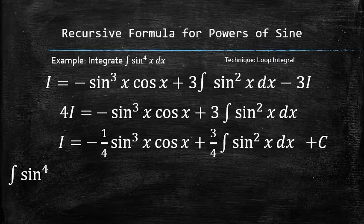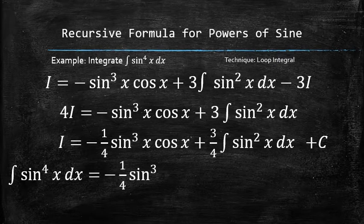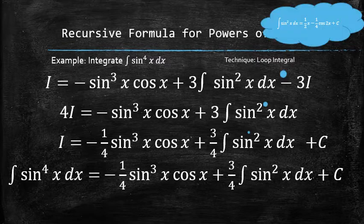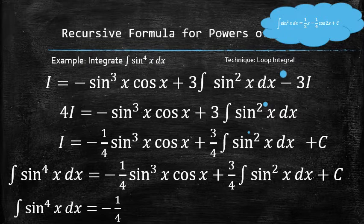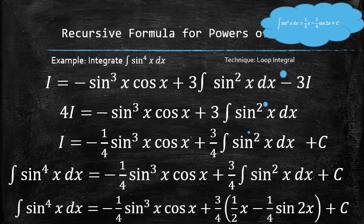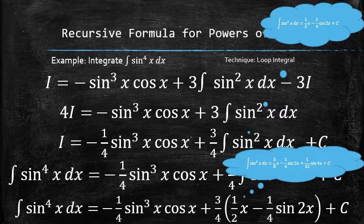Replacing i with the original integral, we now have the formula that relates the integral of the sine raised to the power of 4 to the integral of sine squared, which we already know. Therefore, we now have the formula for the integral of sine raised to the power of 4. Note that trig identities can be used to show that this result differs from the previous one only by a constant.